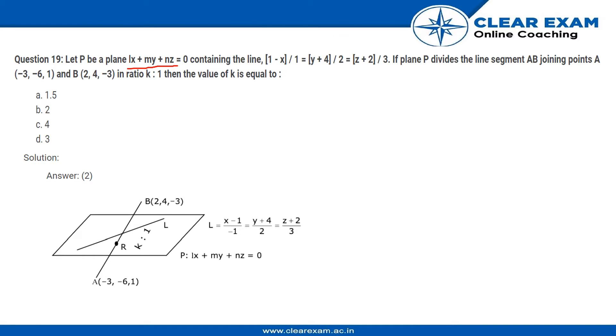So what we will do is we know this is the line that we are talking about, this is segment AB that has these points and we have the K is to 1 ratio, the equation of plane, the equation